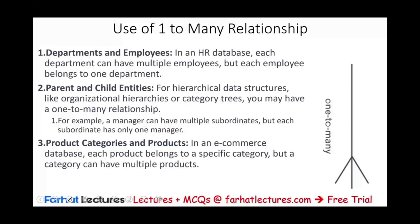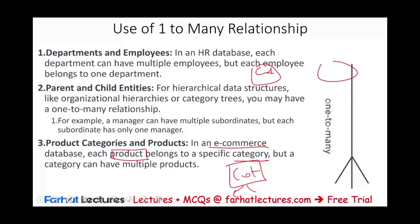Another example is products and categories. In an e-commerce database, each category can contain many products — say 80 categories, each with many products within it. But each product is classified under only one specific category. This is another instance of a one-to-many relationship.